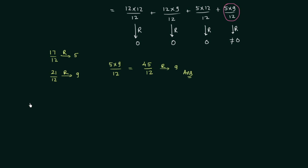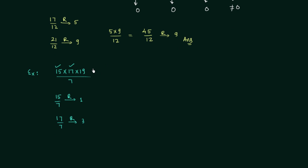In the next example we need to find the remainder when 15 multiplied by 17 multiplied by 19 is divided by 7. First, 15 divided by 7 gives remainder 1. Then 17 divided by 7 gives remainder 3. Then 19 divided by 7 gives remainder 5. We multiply these remainders: 1 × 3 × 5 = 15, then divide 15 by 7, and the remainder is 1.